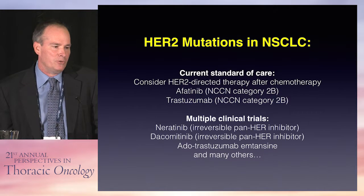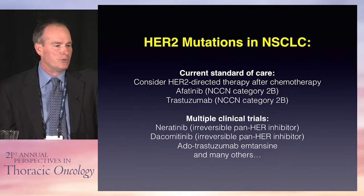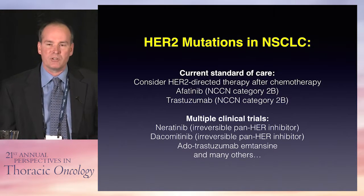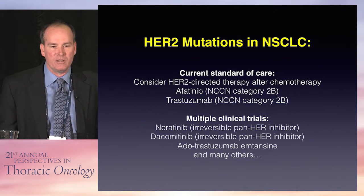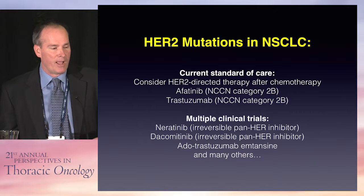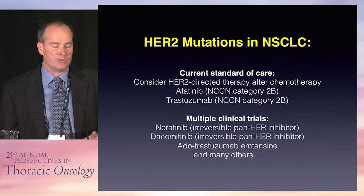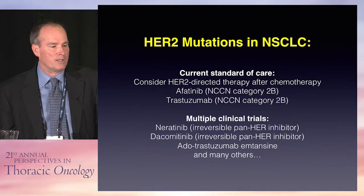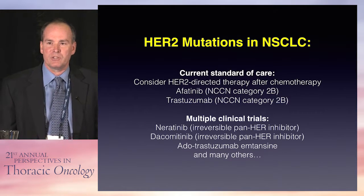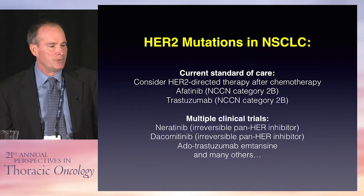For HER2 mutated exon 20 insertion non-small cell lung cancer, it's reasonable to consider HER2-directed therapy after progression on chemotherapy. Afatinib is listed in the NCCN guidelines with a Category 2B recommendation, as is trastuzumab. There are other trials looking at HER2 inhibitors — neratinib, dacomitinib — as well as TDM1 for this patient population. It's a rare mutation and hard to do large studies, but hopefully we'll have more information in the future.